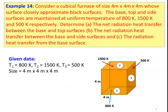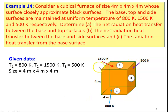We take Example 14. Consider a cubical furnace of size 4m × 4m × 4m whose surfaces are closely approximate to black surfaces. The base, top, and side surfaces are maintained at temperatures of 800 K, 1500 K, and 500 K respectively. Determine: (a) net radiation heat transfer between the base and top surface, (b) net radiation heat transfer between the base and side surfaces, and (c) radiation heat transfer from the base surface. The base is surface 1, the top is surface 2, and all four side surfaces combined are surface 3, with T1 = 800 K, T2 = 1500 K, T3 = 500 K.